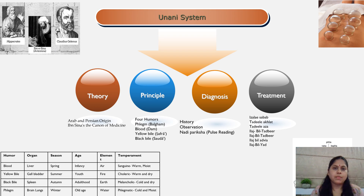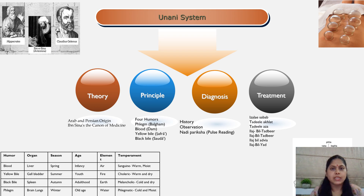Unani medicine involves simple physical means to cure disease. Techniques under regimental therapy include Hijama (cupping, as seen in the image), Fasd (venesection), Tarik (sweating), Idrar (diuresis), Hammam (Turkish bath), and Dalak (massage). Unani dosage forms can be solid, liquid, or semi-solid — such as Tila (liniment), Khisanda (infusion), Joshnada (decoction), and Hub (pills). In this way, the Unani system plays a very important role by utilizing various medicinal plants, either alone or in combination with animal products or minerals, to cure the human being.